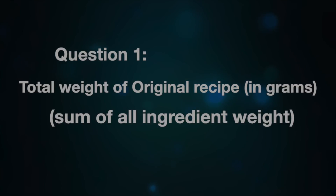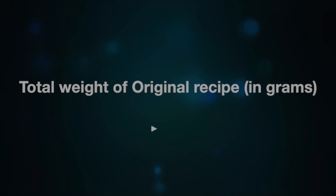For baker's ratio, first you need to find the total weight of the recipe you're trying to adjust or convert. For instance, if the person gives you: flour is 220g, fat is 29g, salt is 18g, and so on, but doesn't give you the total weight — it is your job to take a piece of paper and add everything up to find the total weight.